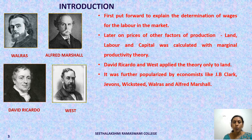The theory was first put forward to explain the determination of wages for labor in the market. But later on, prices of other factors of production were also explained with the help of marginal productivity theory. The economist David Ricardo and West were the first to explain the concept of marginal productivity. David Ricardo, in his famous Ricardian theory of rent, calculated the rent based upon the marginal productivity of land. West also applied this theory only to land.